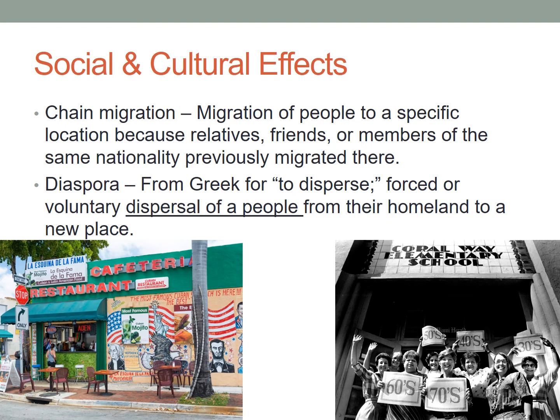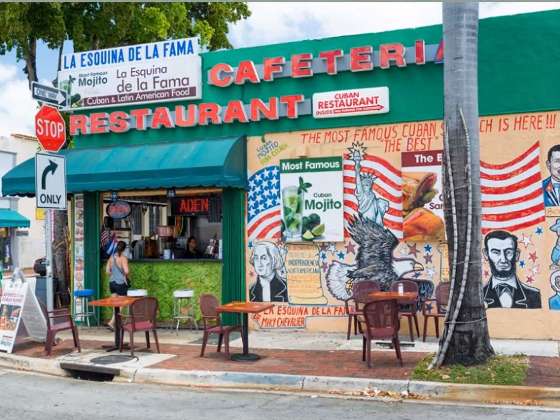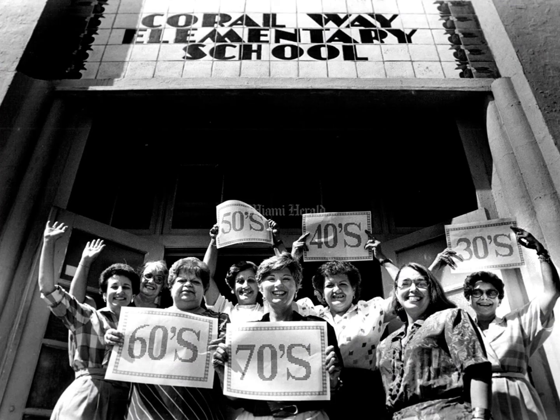Cuban migrants clustered in a certain neighborhood that came to be known as Little Havana — an example of an ethnic enclave. Little Havana is home to Cuban restaurants, bakeries, shops, museums, art galleries, and theaters that provide greater access to Cuban culture. A field study would hear Cuban music and witness Cuban dance styles. Spanish is spoken and signage is written in Spanish as well. In fact, Little Havana was home to the first bilingual elementary school in the United States, known as Coral Way Elementary School.